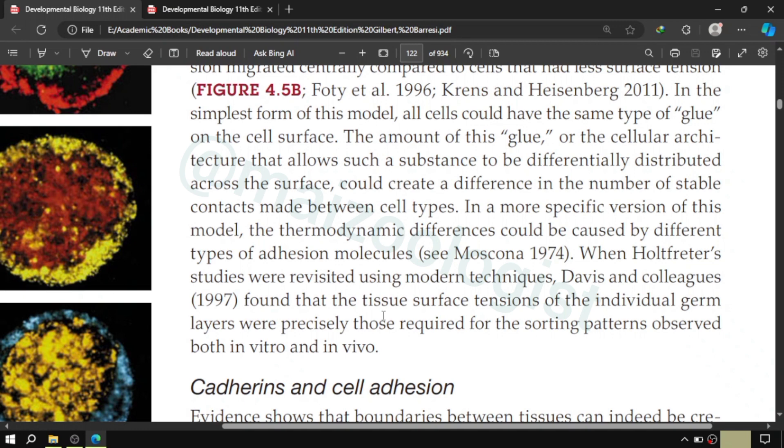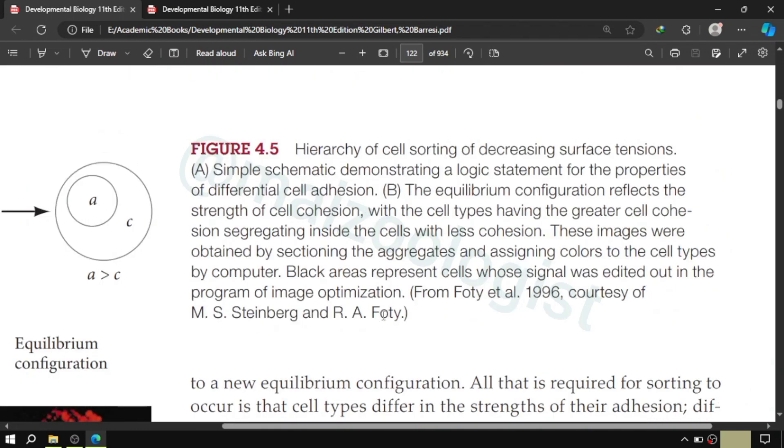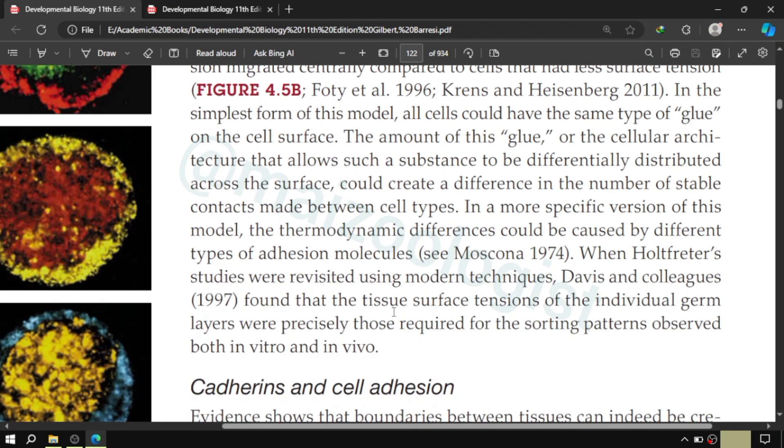So this is how from the physical point of view, from the point of view of physics, this morphogenesis process occurs, and this is how based on the physical processes, physical aspects such as surface tension, cells migrate with respect to each other.